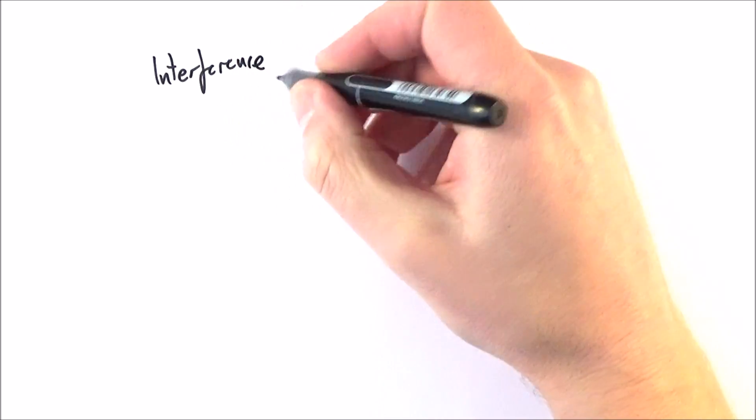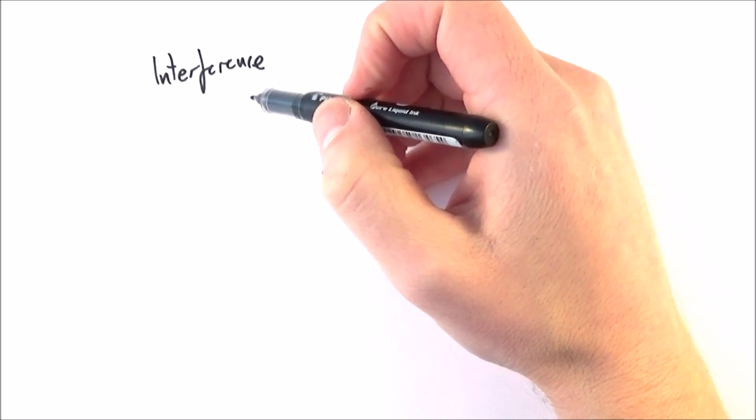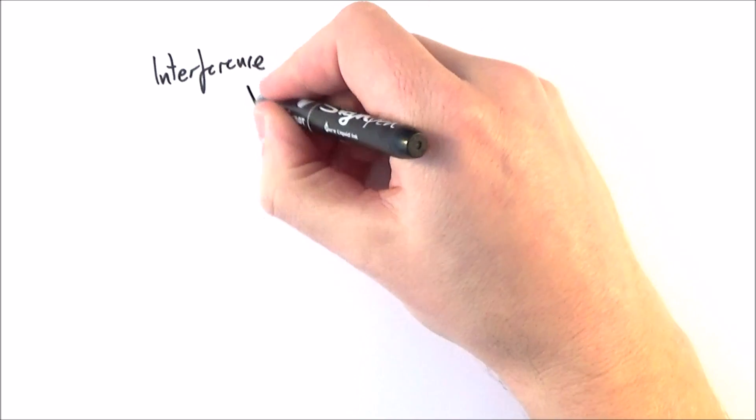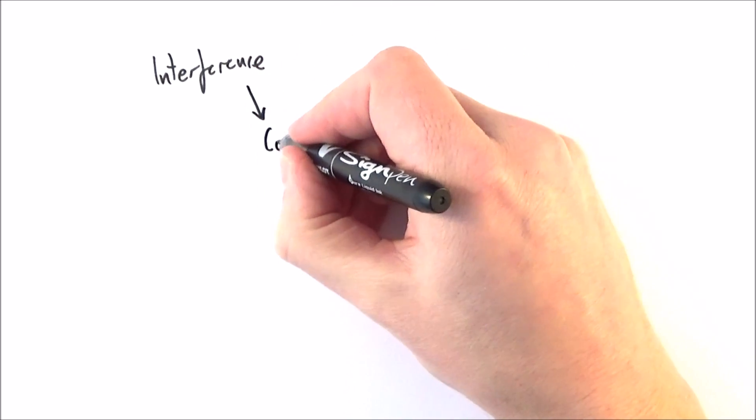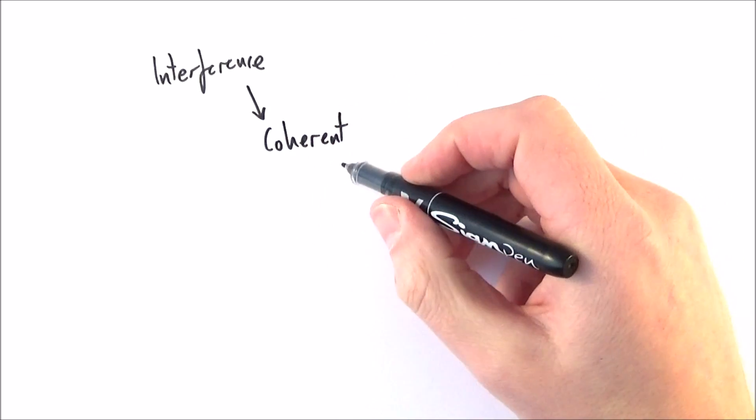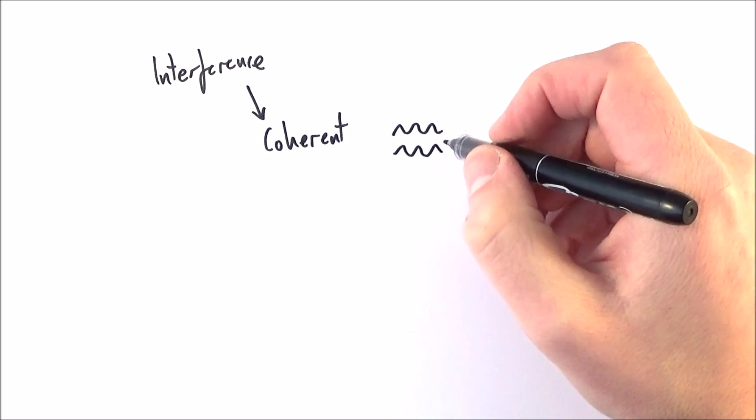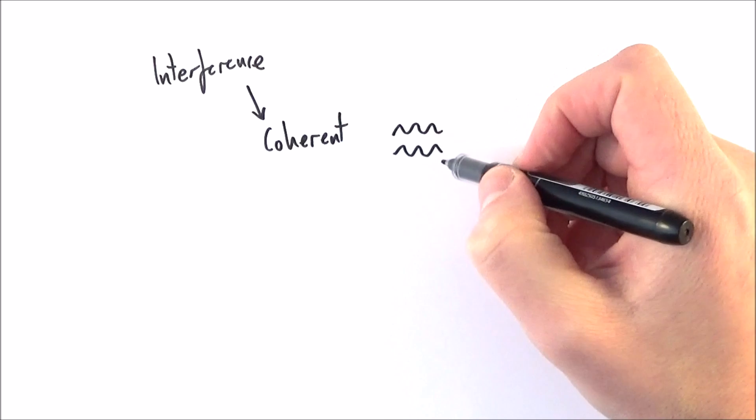First of all, in order to think about the interference of waves, which is basically the process of points forming when two coherent waves pass through one another, we need to think about the word coherent or coherence. So waves are coherent when we have two wave sources, or more, that emit waves with a constant phase difference.